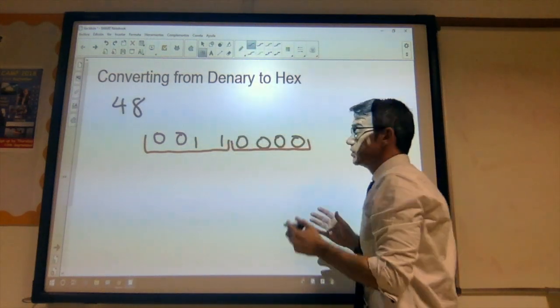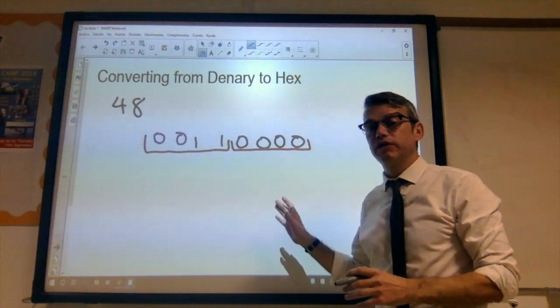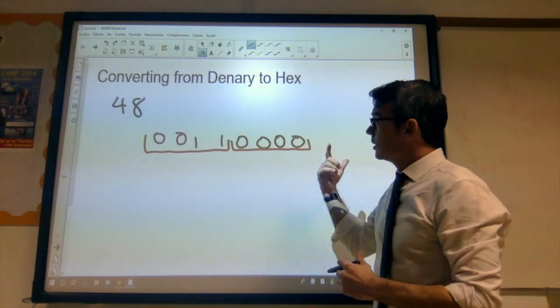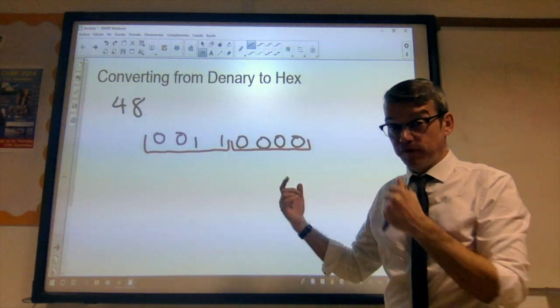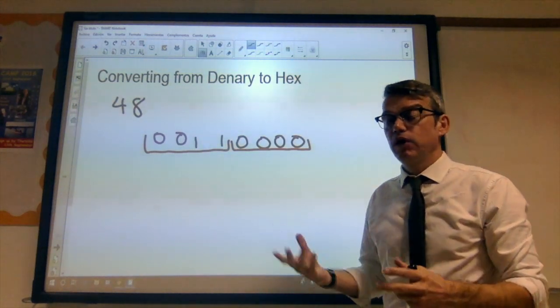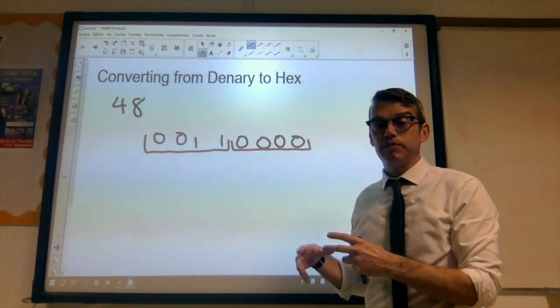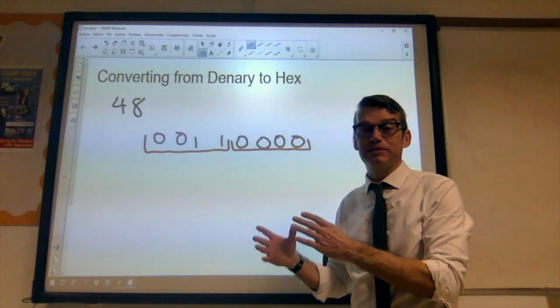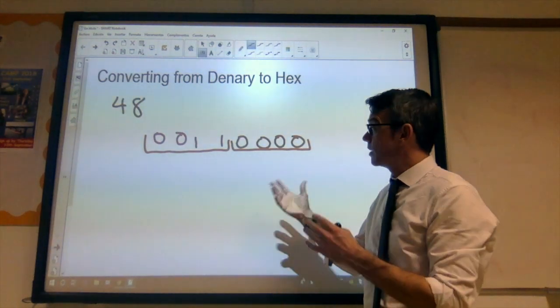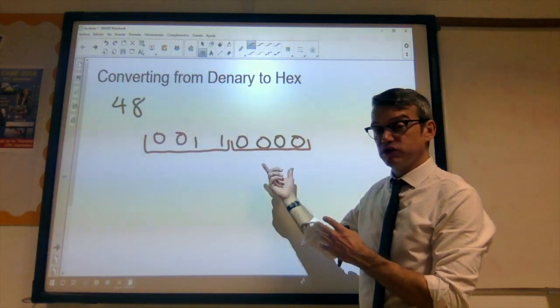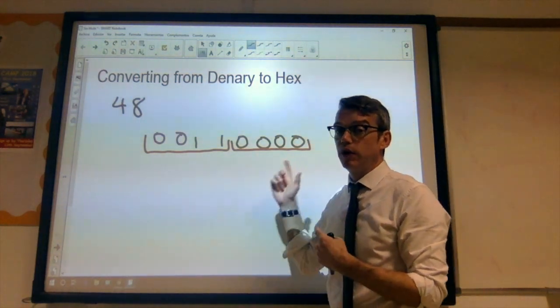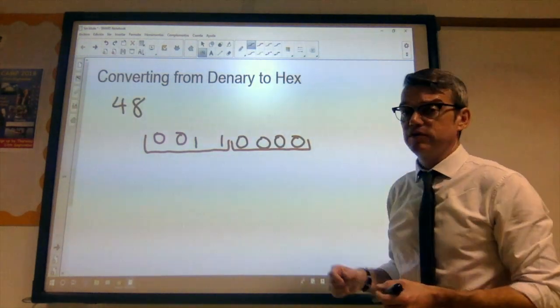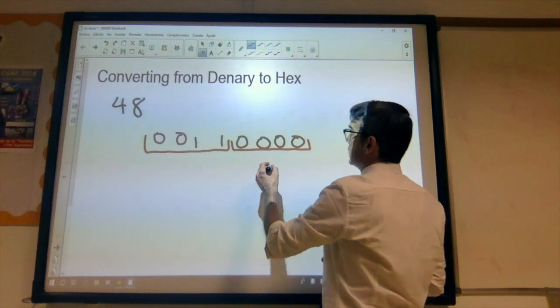And then we convert those into the equivalent number from the hexadecimal number system. Now, the largest number that can be represented by four bits is, of course, 15, which means that the hexadecimal numbers, with just one column, one hexadecimal digit, can represent a value, all of the possible values that we can get from four bits in the binary number system. So, zero, zero, zero, zero, that's nice and easy. We get zero.